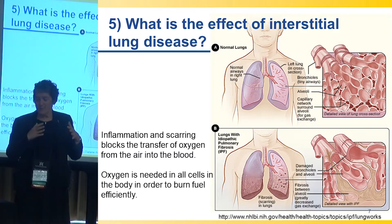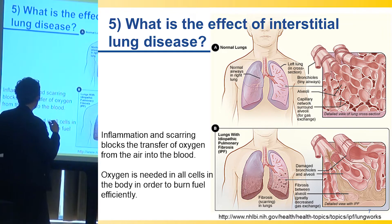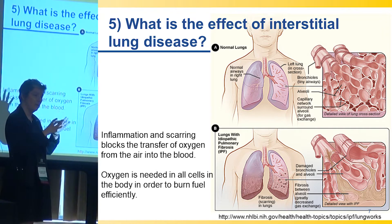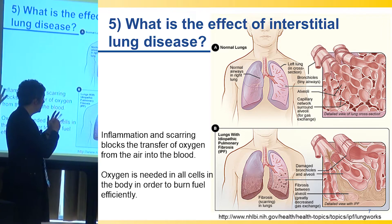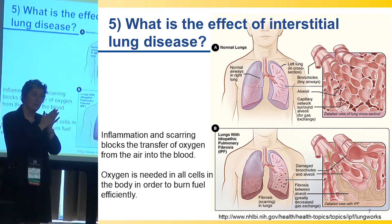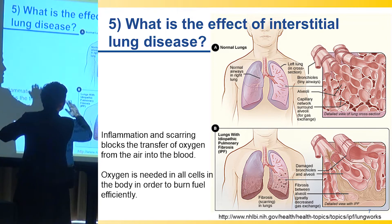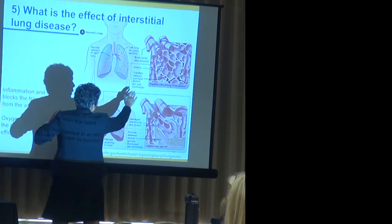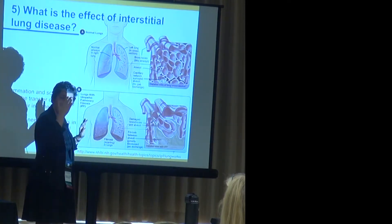Let me talk about the impact of interstitial lung disease. That very important space where the alveolus — the airspace — is wrapped around by the capillary or blood vessel where oxygen transfer takes place is called the interstitium. In a normal lung, you have blood vessels that essentially wrap around the airspaces, so there's very little barrier to transfer of oxygen from the air into the blood.